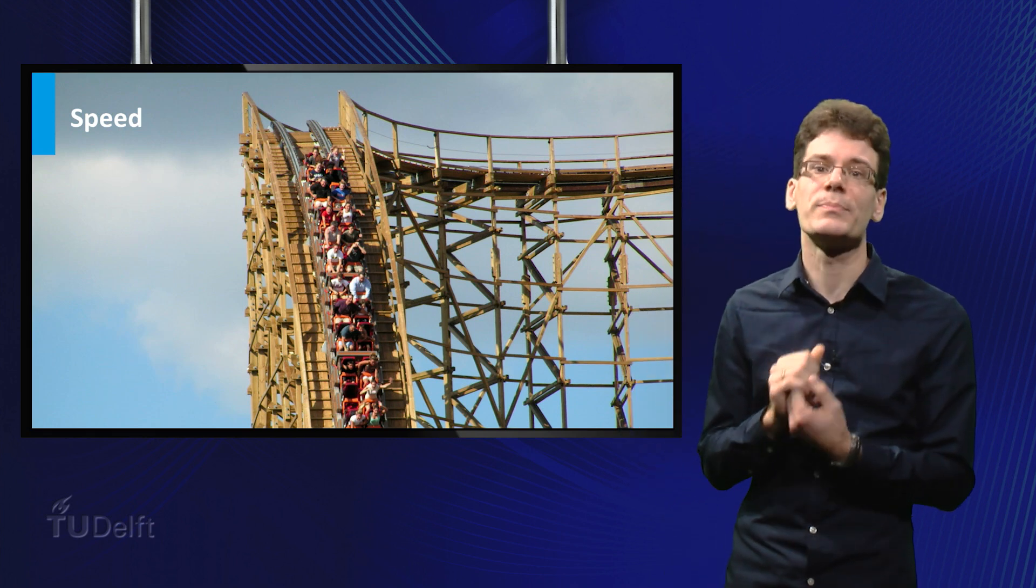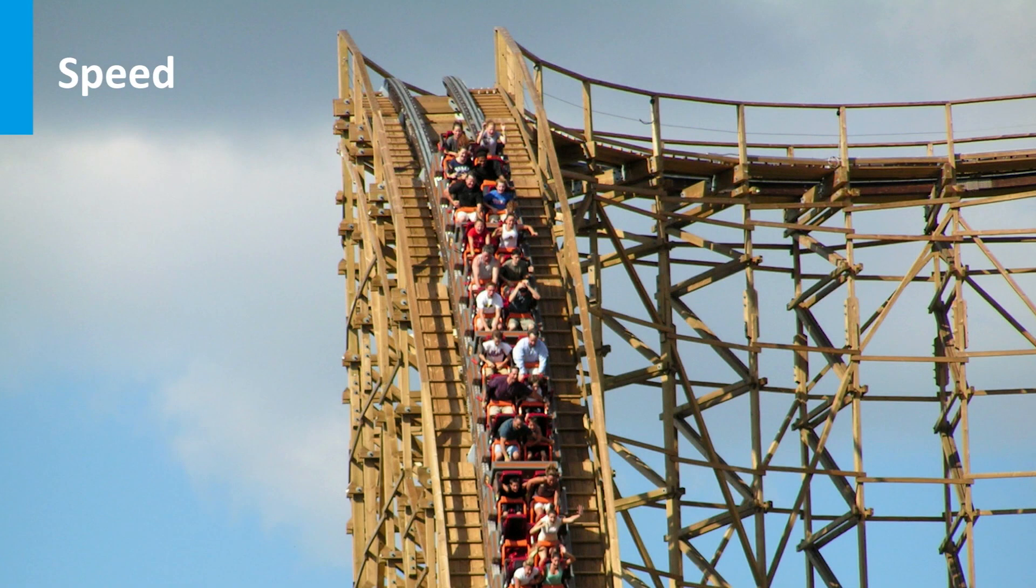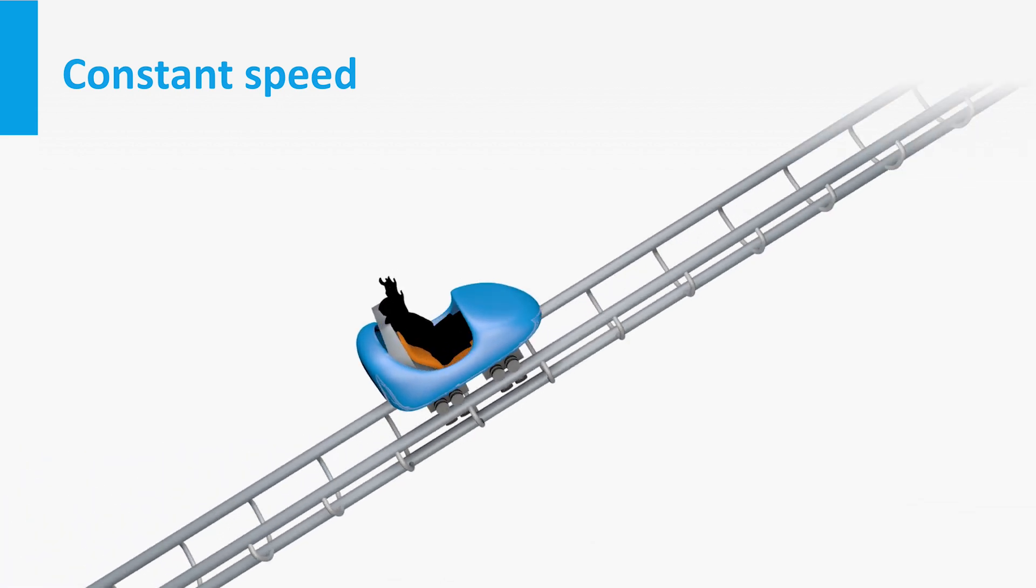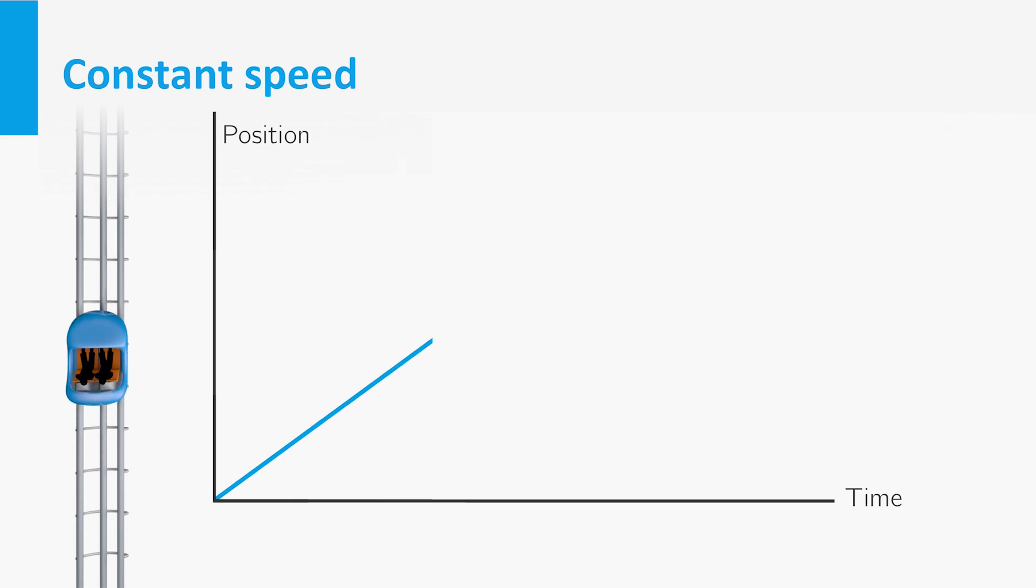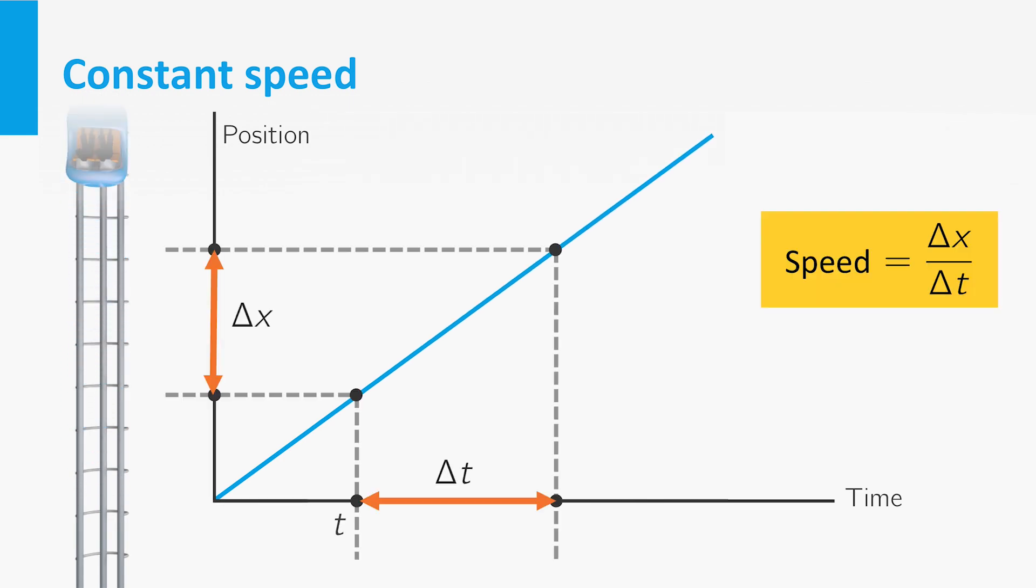Now let us consider the concept of speed. First, suppose that the speed of the roller coaster cart is constant on some part of the track. In that case, you can determine it by measuring the distance, delta x, travelled during a time interval delta t, and then take the quotient. For constant speed, it does not matter what time interval we take.